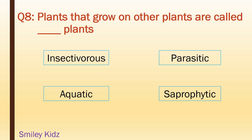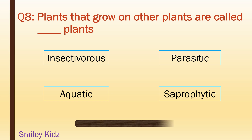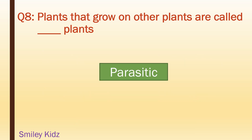Plants that grow on other plants are ___ plants: insectivorous, parasitic, aquatic, saprophytic. Your time starts now. Your time is up. And the right answer is parasitic.